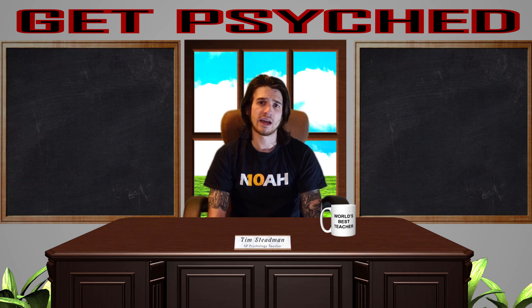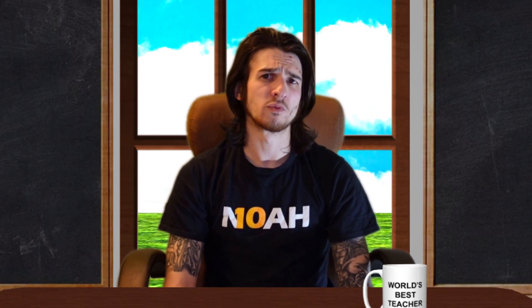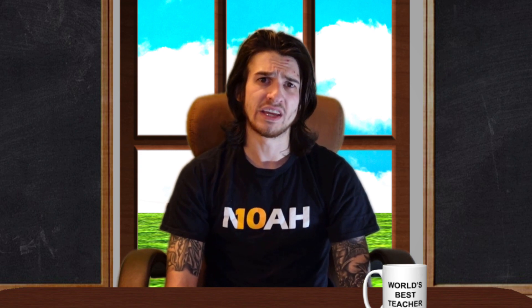The AP Psych test has two sections: the multiple choice section and the FRQs. You are going to have 70 minutes to answer 100 multiple choice questions and 50 minutes to answer two free response, or FRQ, questions. The multiple choice portion is about 66% of your final score while the FRQs will be about 33% of your final score.